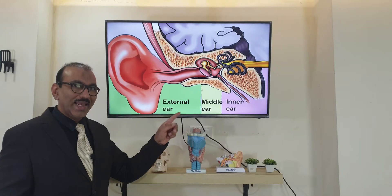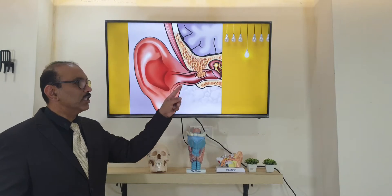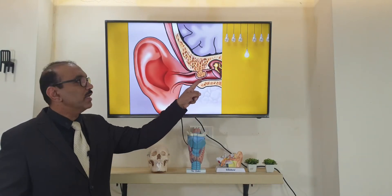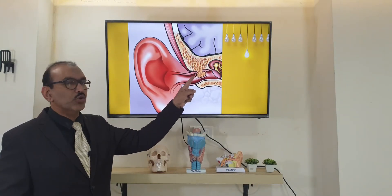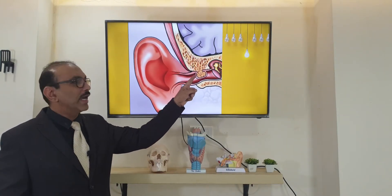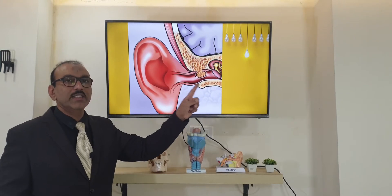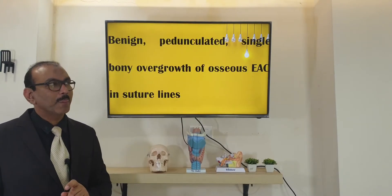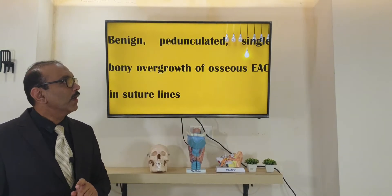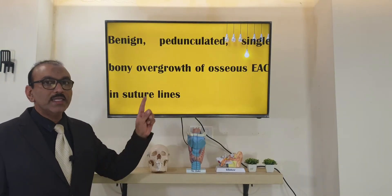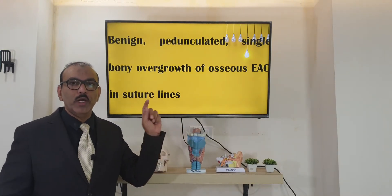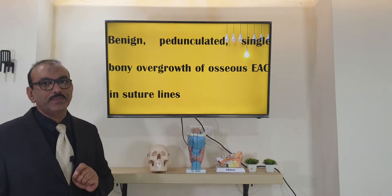As you can see in this picture, this is the osteoma seen from the suture line and it is single, seen only in one side. That is the definition of osteoma of the external auditory canal.